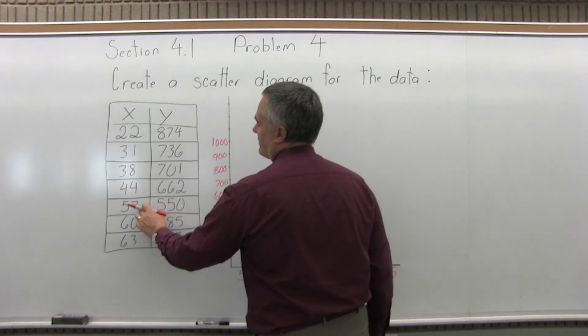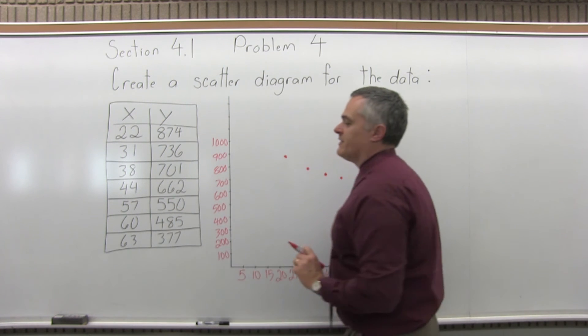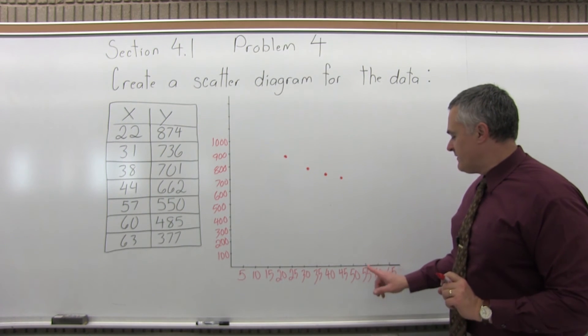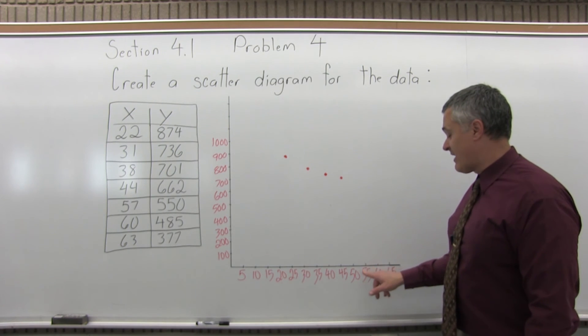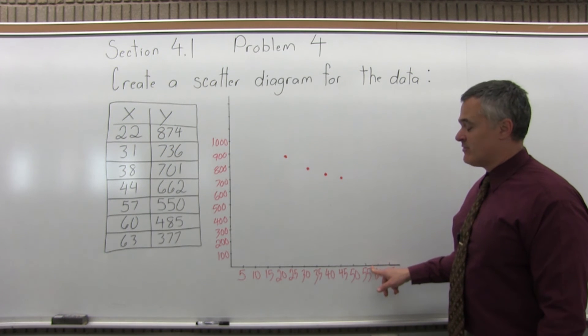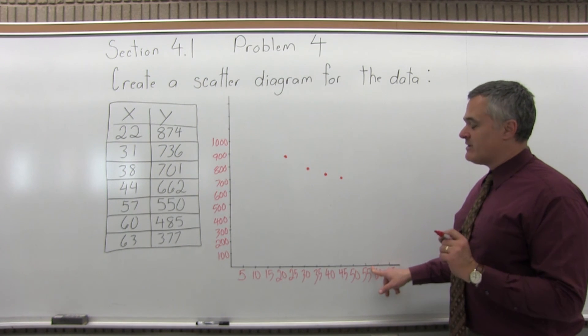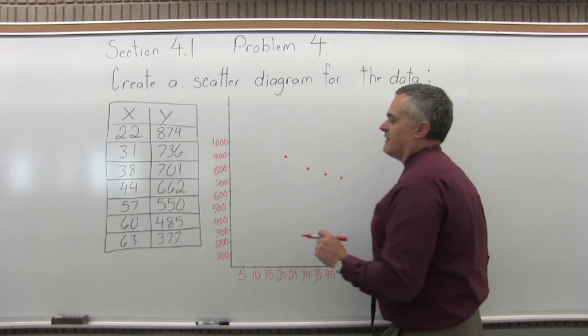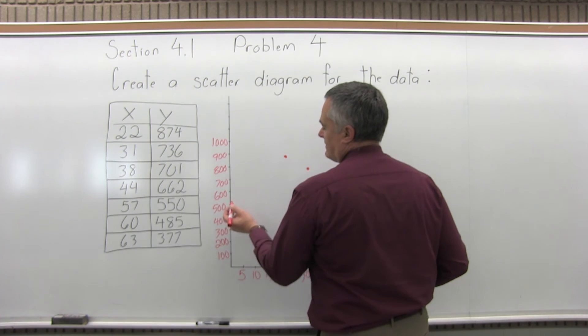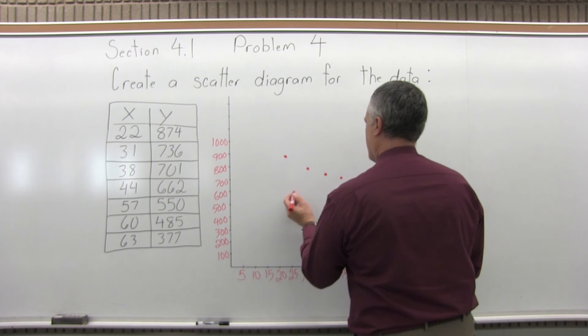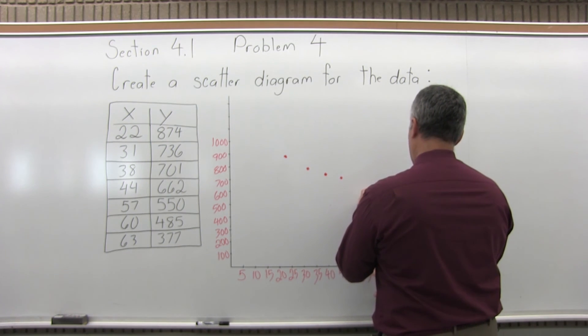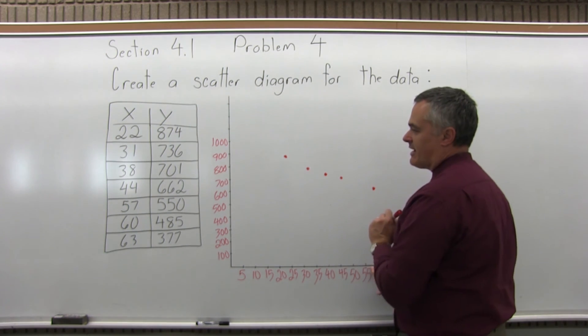The next one over 57 for X, up 550 for Y. So 57 for X, again, 57.5 is exactly halfway between 55 and 60. And by eye, it would look about the same. 57 would be very slightly less than 57.5. The height 550. So that would be exactly between 500 and 600. Follow that height out. Line it up with my 57 for the X, about like that.